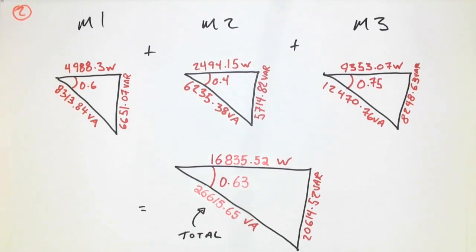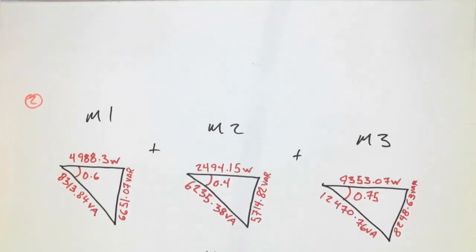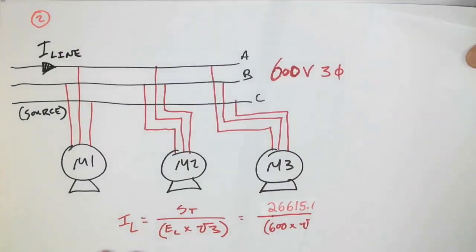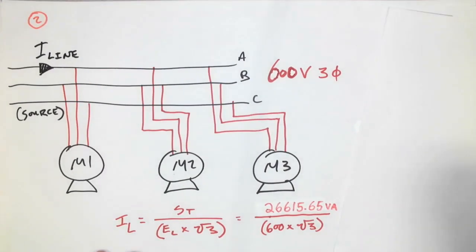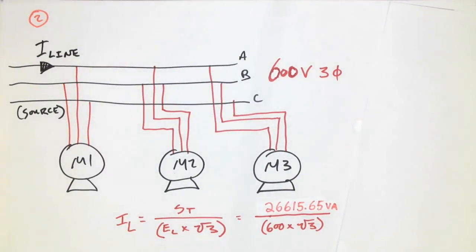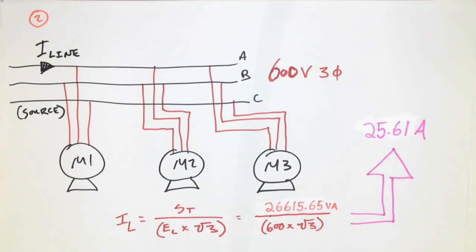Let's go back to the question because it wanted to know: what is the total VA? We've already calculated that. And what is the total line current? We take our S total divided by E line times root three, and we end up with a line current of 25.61 amps.